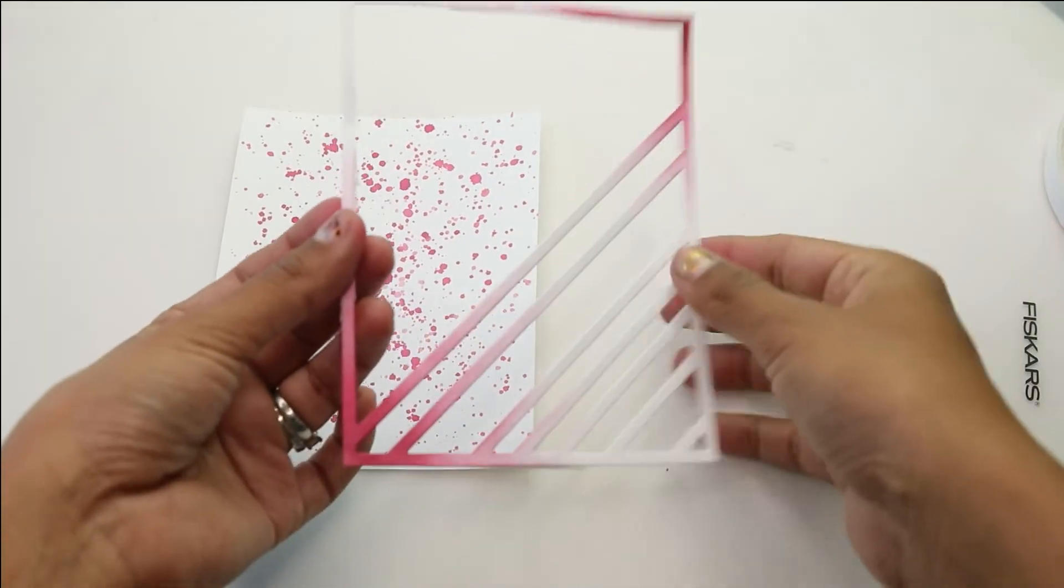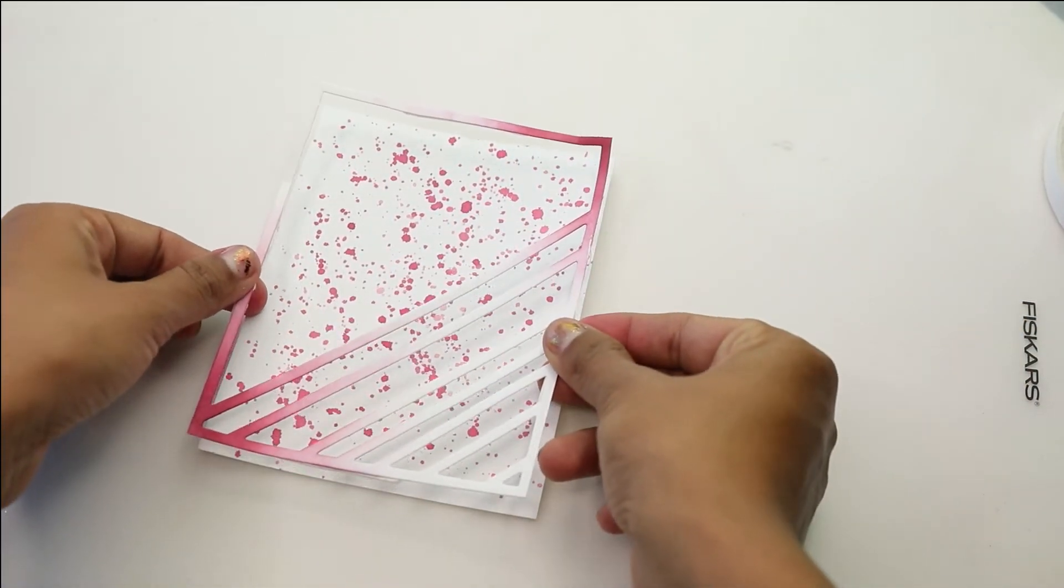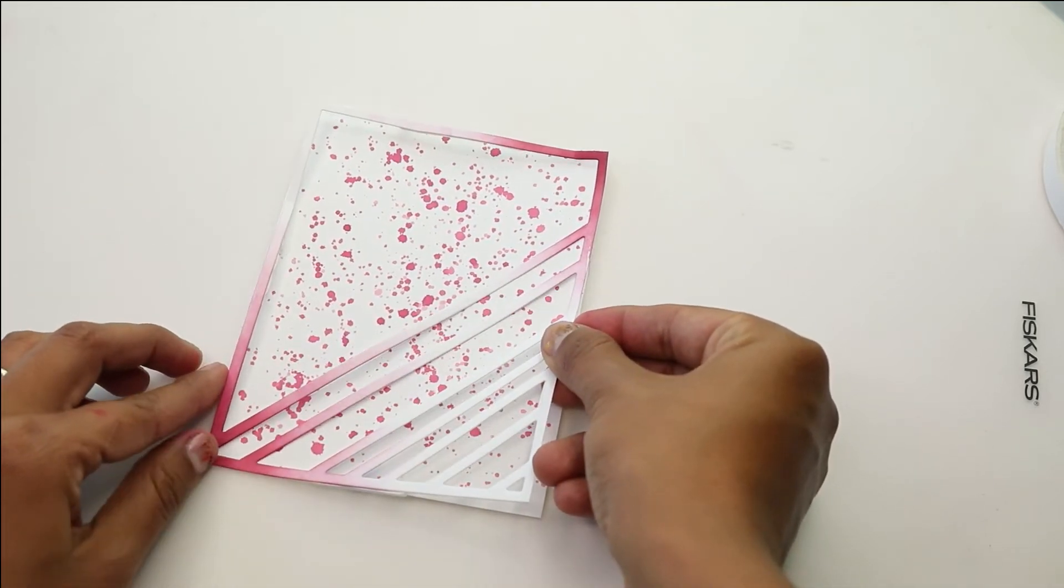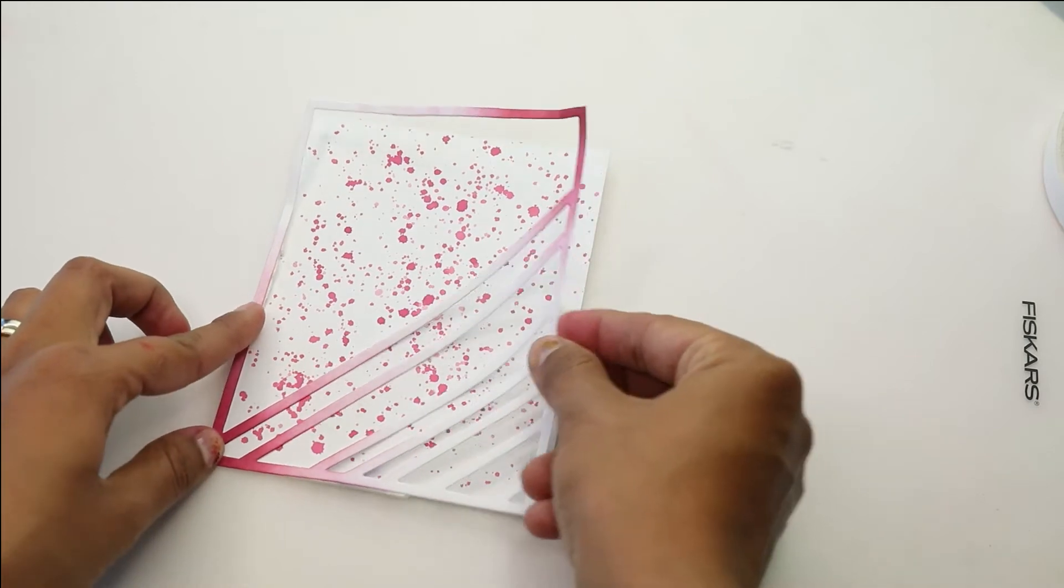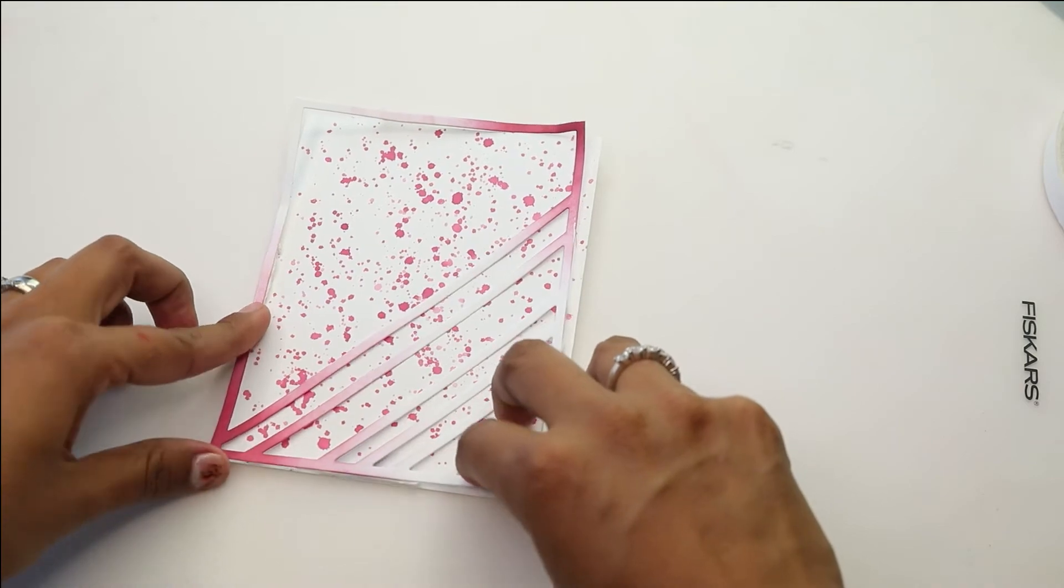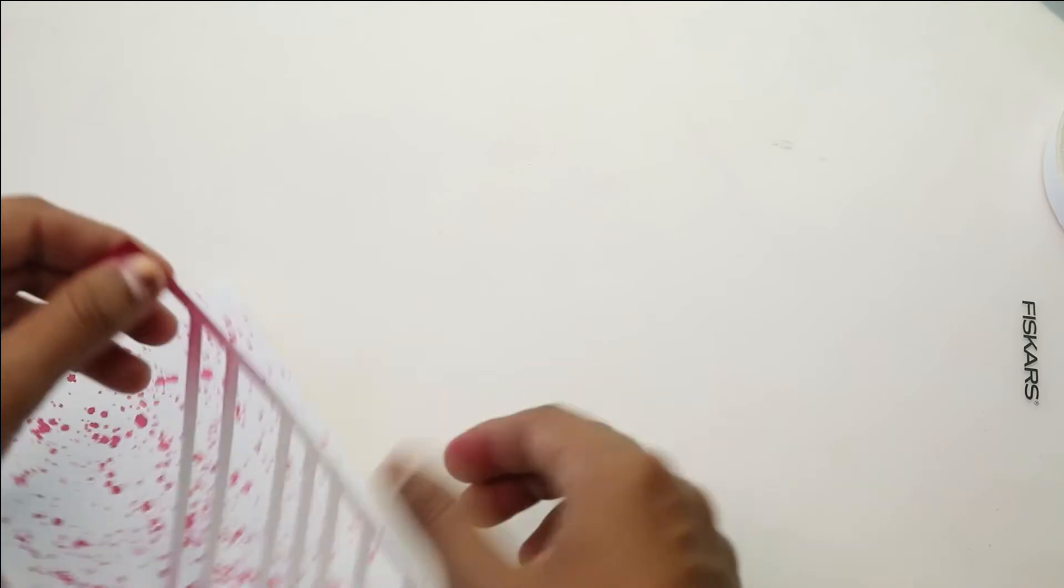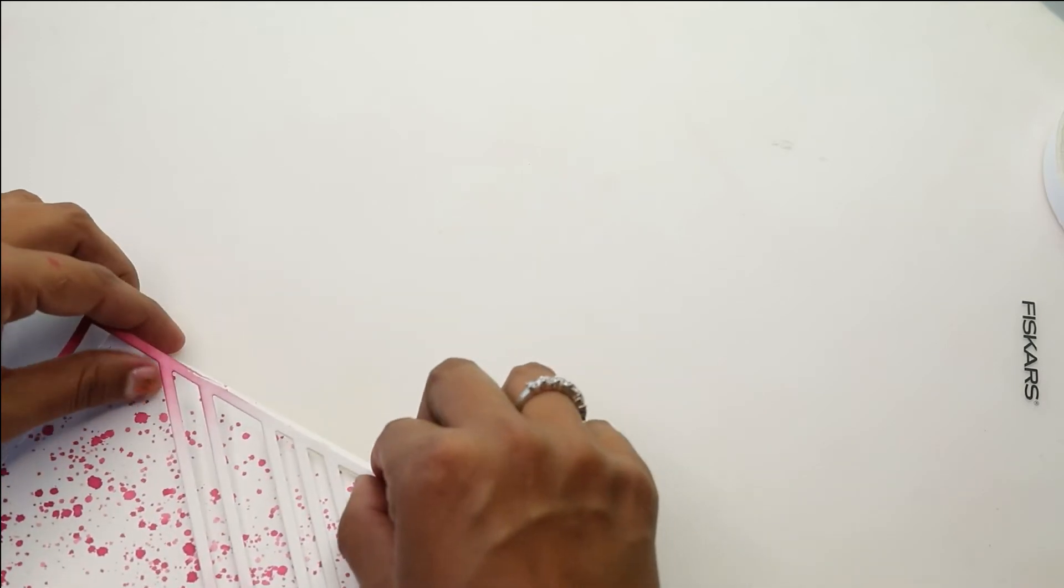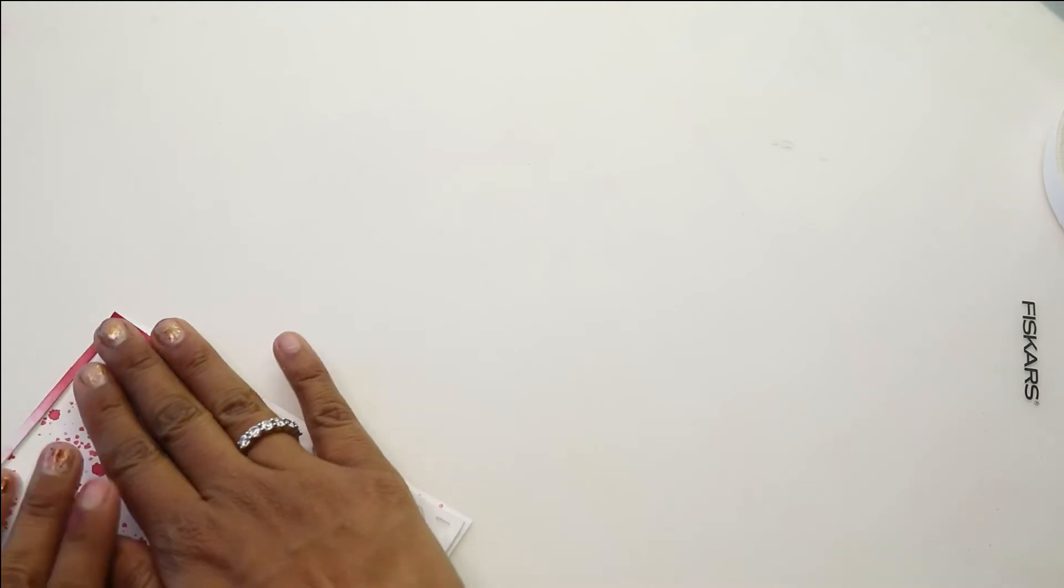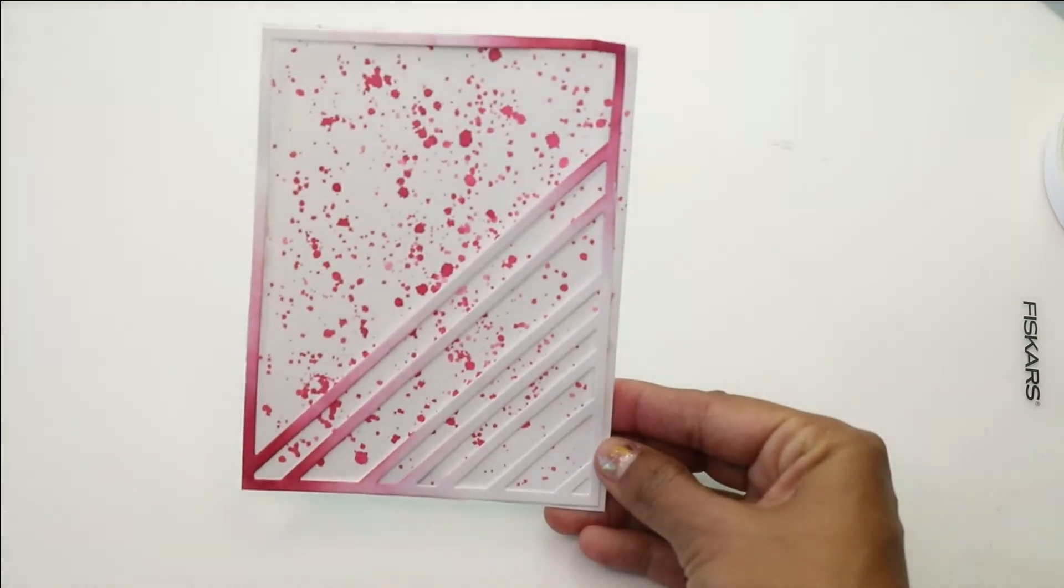And we are ready to assemble our card. So I have some foam adhesive on the back of my cover die here. I'm gonna place it down over the dried DIY splatter. So make sure it is completely dry. Because if not, the glue wouldn't adhere, and then you'll end up smearing the watercolor itself. So I'm just trying to line it up. And I figured out that my cover die was actually smaller than my background. So I came in kind of post-card production, and trimmed that edge.